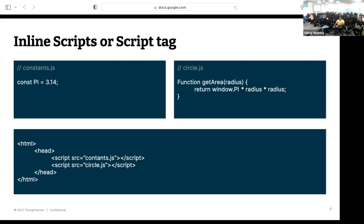We'll trace the evolution of the module system from that point until now. First, we all know about inline script tags. Even if dividing code into multiple files, you had to include those files via script tags in your HTML. Looking at the example code: a constant 'pi' declared in constants.js and a getArea function in circle.js utilizing that file. But 'pi' is now exposed on the global window object. What are the problems with this approach?